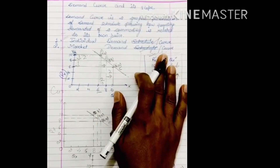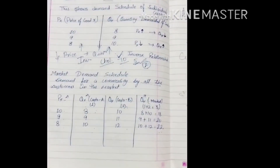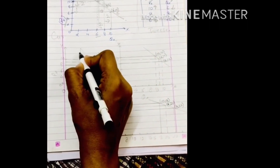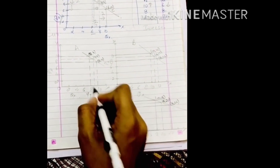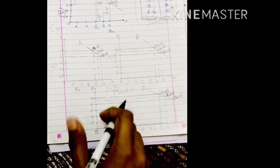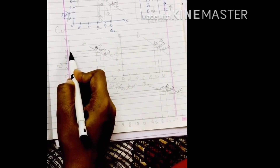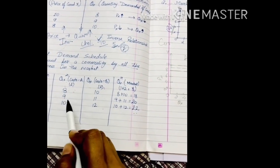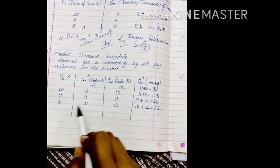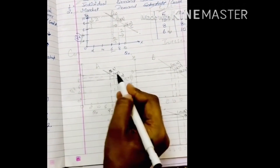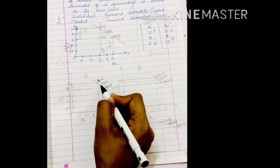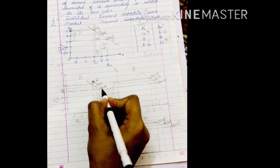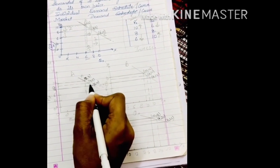Now we come to the market demand curve. I have the same market demand schedule here. When I combine customer A's demand and customer B's demand, that mixture gives us the market demand curve. For customer A: at 10 rupees the demand is 8 units, at 9 rupees the demand is 9 units, and at 8 rupees the demand is 10 units. I have plotted points A, B, and C on the graph.